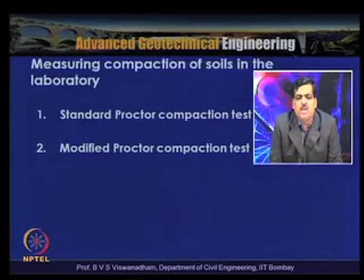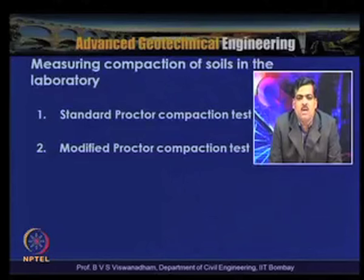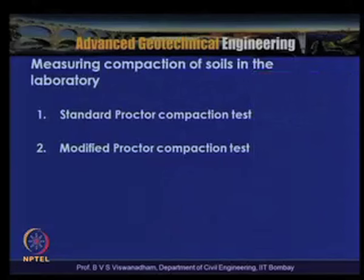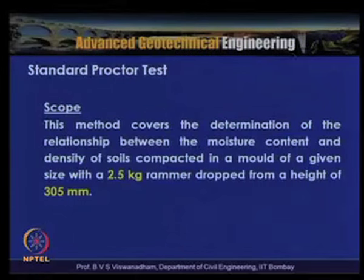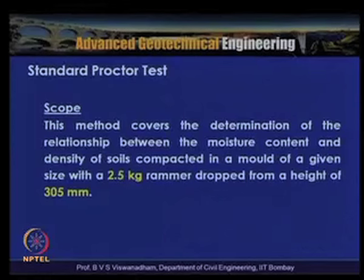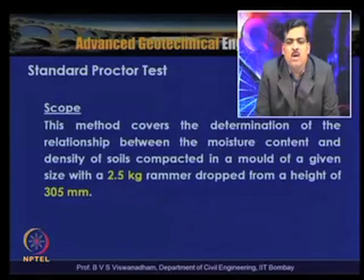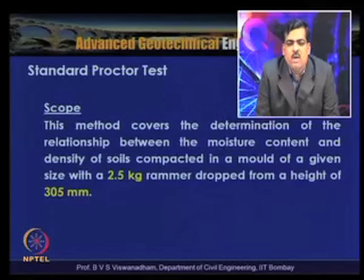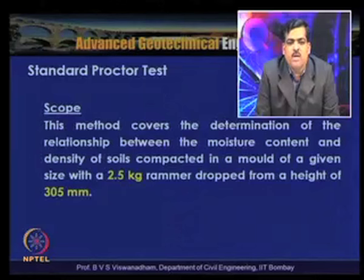The Standard Proctor test covers the determination of the moisture content–density relationship. The soil is compacted in a mould using a 2.5 kg rammer dropped from a height of 305 mm. Three layers are used, with 25 blows per layer. The compactive energy = (25 blows × 3 layers × 2.5 kg × 0.305 m) / volume ≈ 594 kJ/m³.